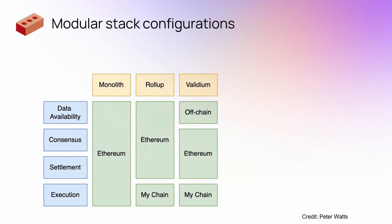And then you have validiums. Validiums are basically roll-ups, but they do not have on-chain data availability, or they do not use the same layer one as the settlement or consensus for data availability. And therefore, they are not roll-ups, but more like sidechains or validiums, as they're termed.